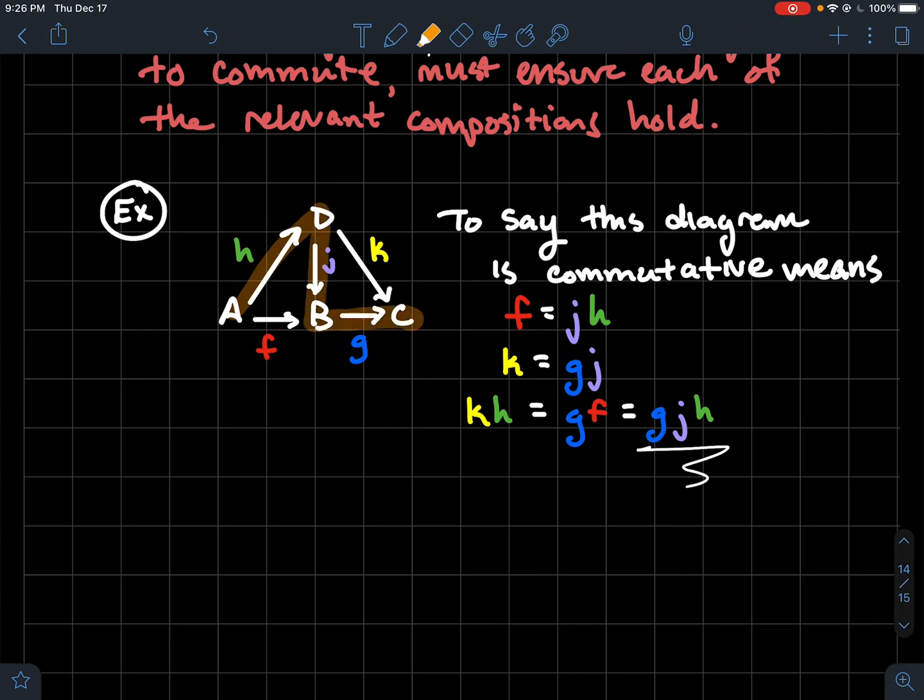So we're saying that should be the same thing as if we did g, f, which would just start here, go all the way over. And that should be the same thing as k, h, which, of course, says start with h, and then go to k. So those are all the three ways that you could go from A to C.